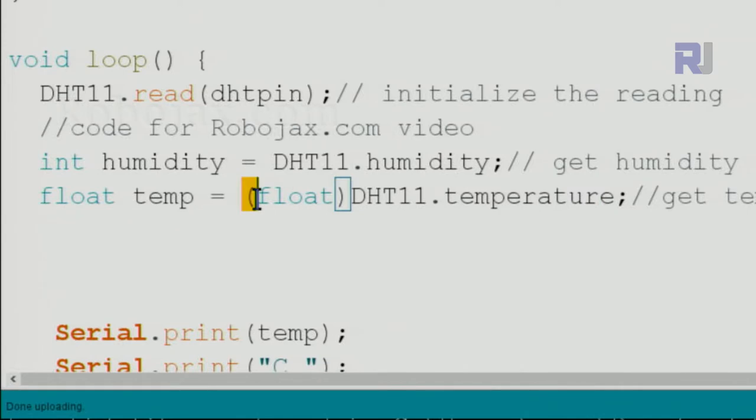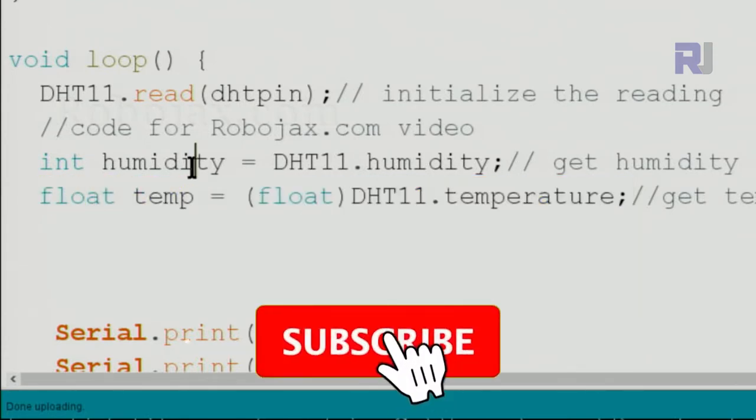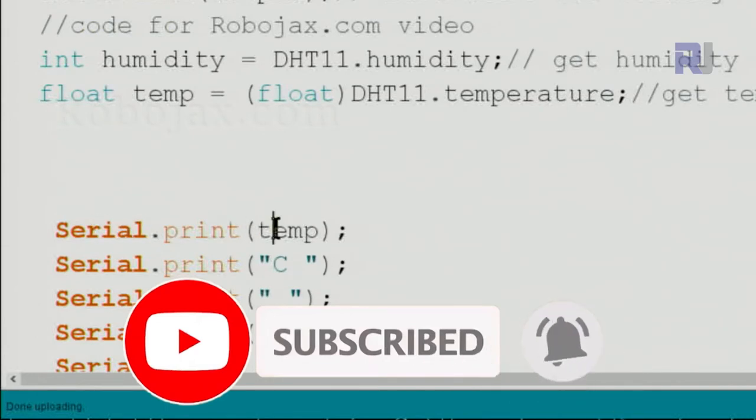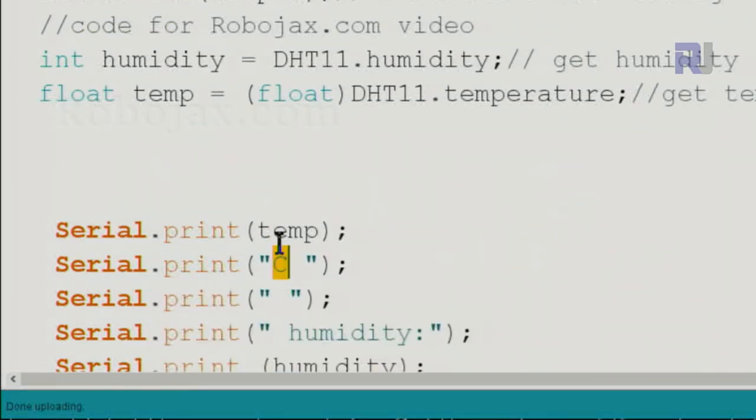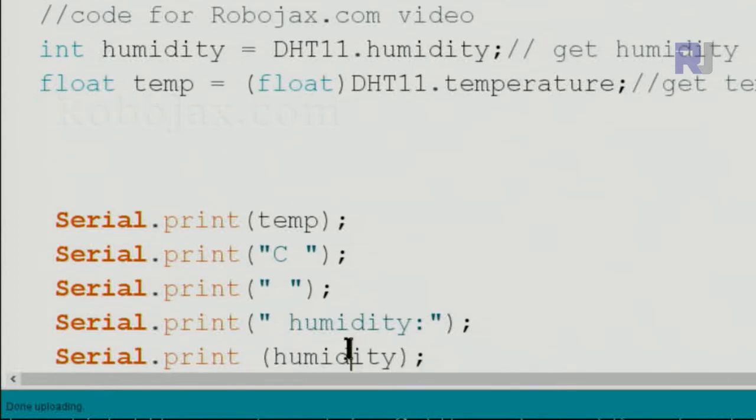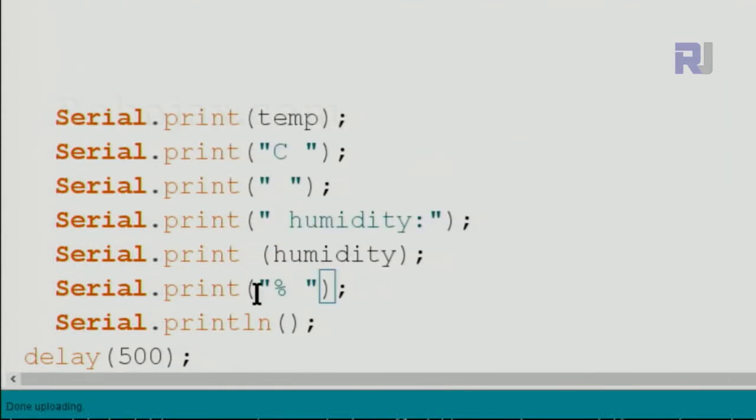Here this is called casting. Inside opening and closing parentheses we put the type float. This will convert this to float here in a new variable called temp of type float. Now we have temperature and humidity. Then we use serial.print to print the temperature, then we put the C as Celsius, we put space. After the Celsius we put humidity the text, and after that we put the actual humidity that we measured here with percent, and then new line. Then we wait 500 milliseconds and the loop continues like that.